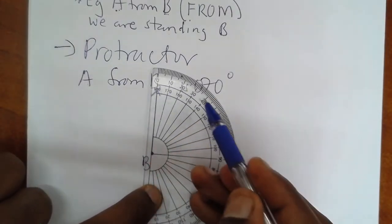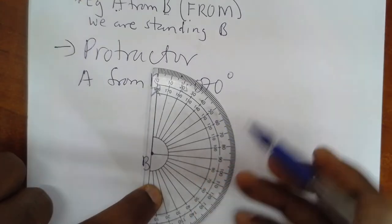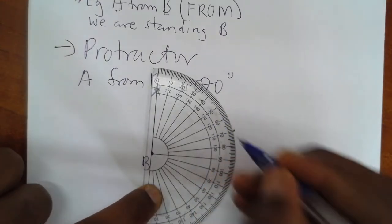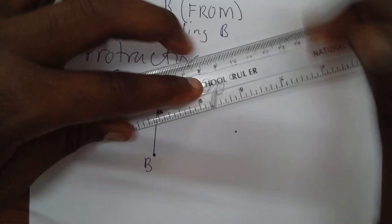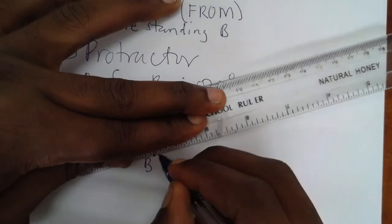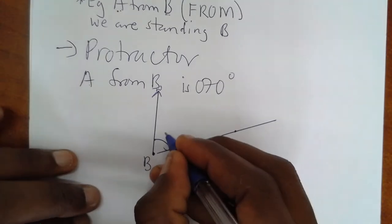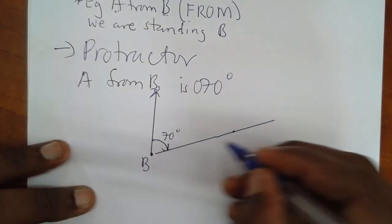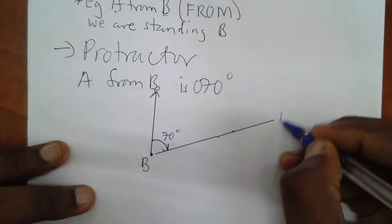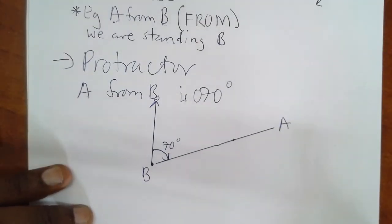Then this center should be at the center. And then at the north line, go and read where your zero is. 10, 20, 30, 40, 50, 60, 70. Keep a mark at 70. Then remove your protractor and draw your line. And it means this is the actual bearing of angle 70. And anywhere on this line, we shall have the location of A.